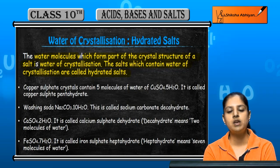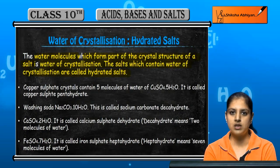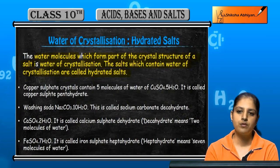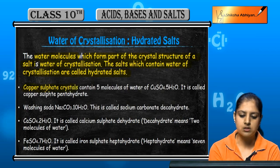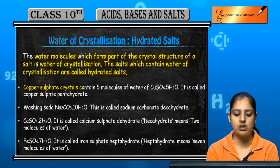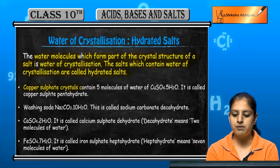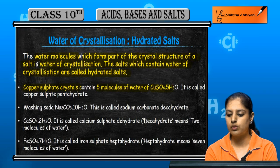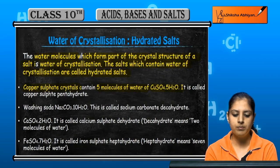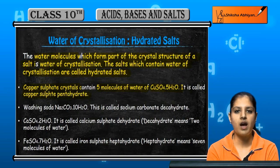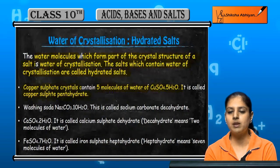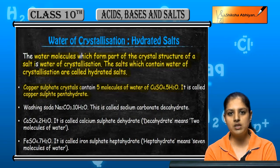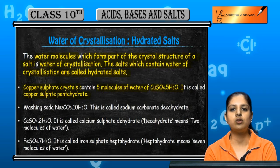Salts without water of crystallization are called anhydrous salts. Anhydrous means without water of crystallization. For example, copper sulfate crystals — CuSO4·5H2O — which means copper sulfate pentahydrate. The five molecules of water are part of its crystal structure; we are not saying it is a solution of copper sulfate in water.